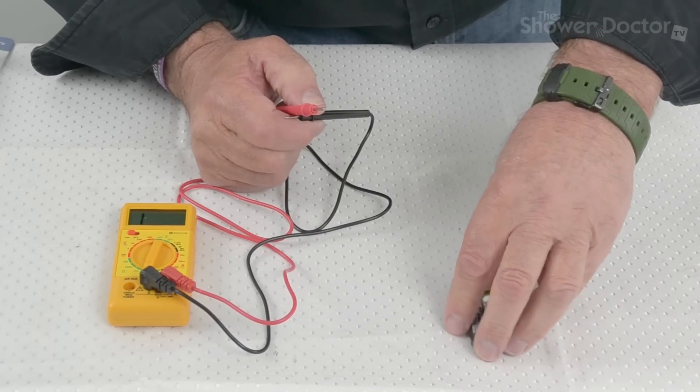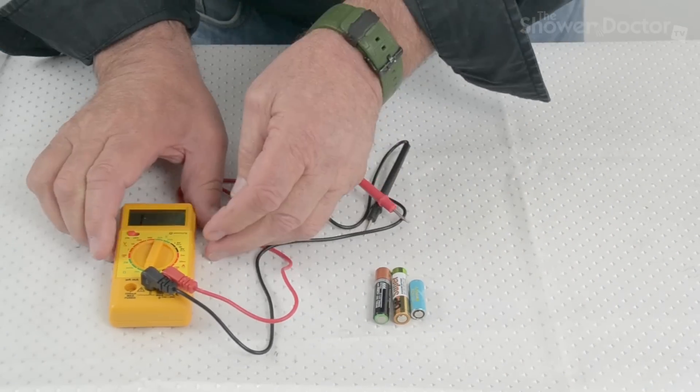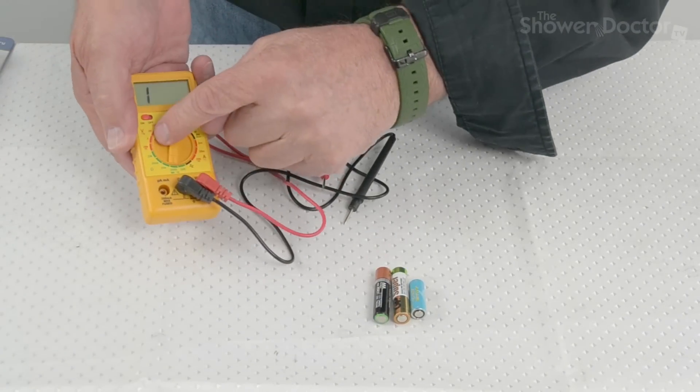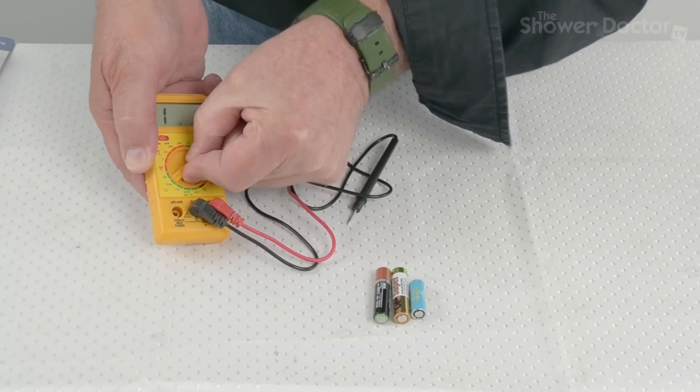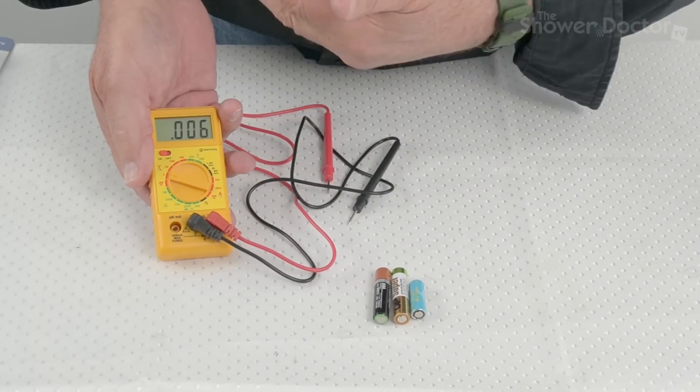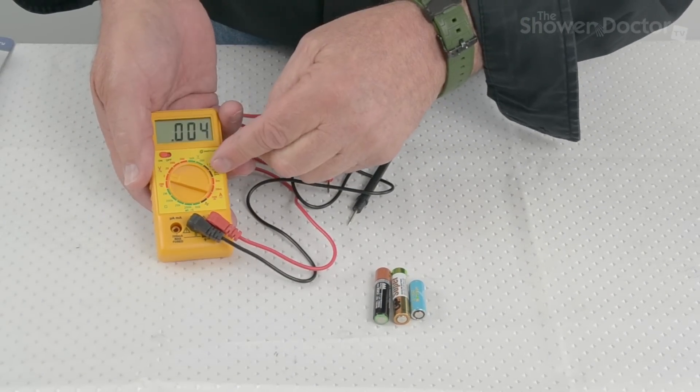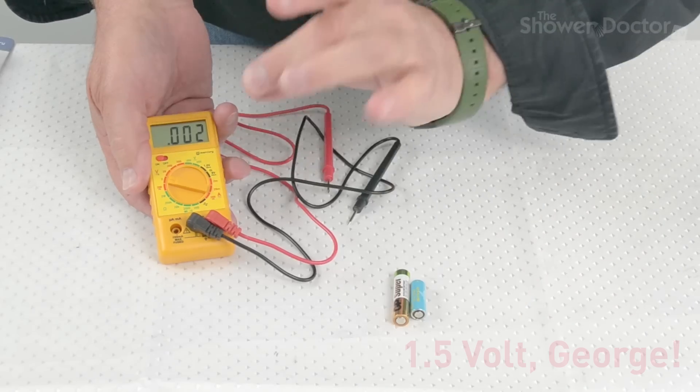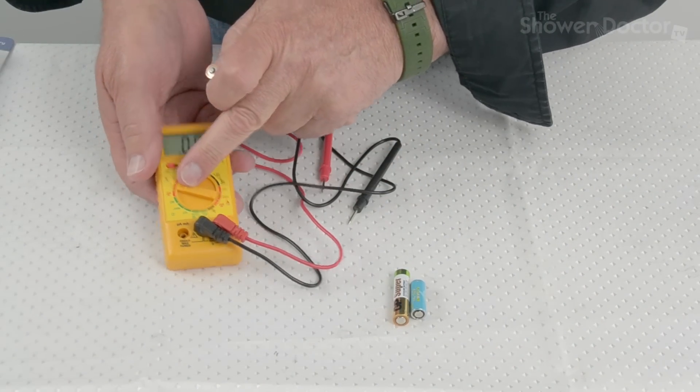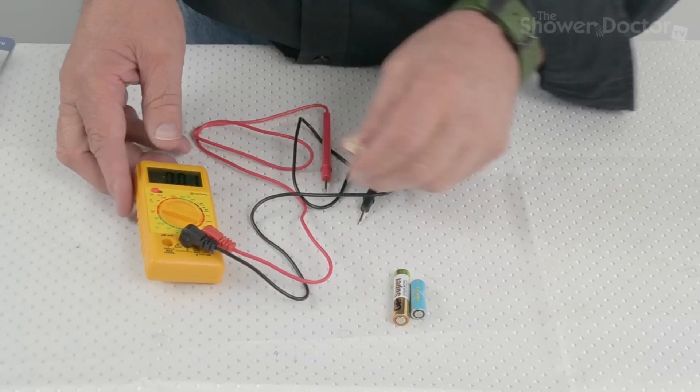The other thing that's very useful for is checking batteries. Now, it's a different setting for checking batteries, that it's this settings up here, these are the DC settings. And so what you've first of all got to do is kind of have a guess at what you think the voltage that you're expecting from the battery. Now, these batteries are 1.5 amp batteries. So we've set it to 2, and we'll check this, we'll check these two batteries first.